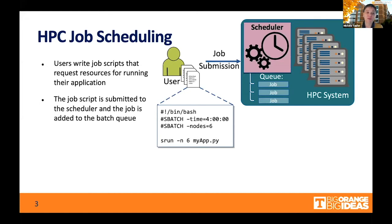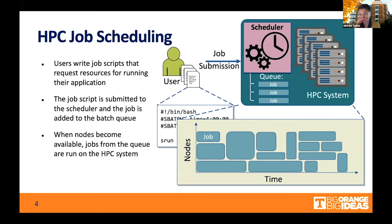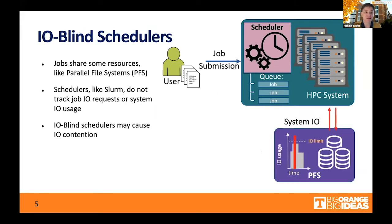As users, we write our job scripts and we define approximately what we need for our applications. We submit these job scripts to our system with the hope that the job gets in the queue, and eventually, when resources are available, the jobs are executed. But one thing that is not part of our description, or is perhaps marginal, is the feature that this job has in terms of I.O. requirements.